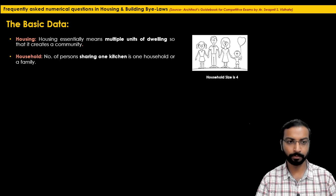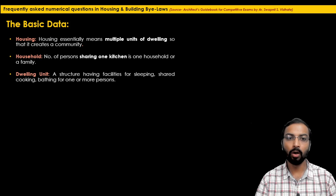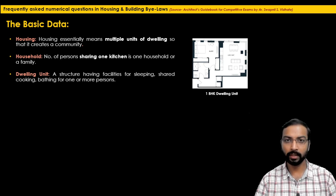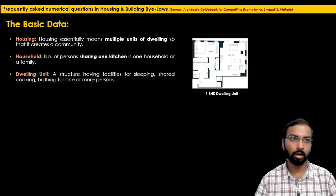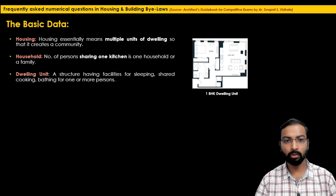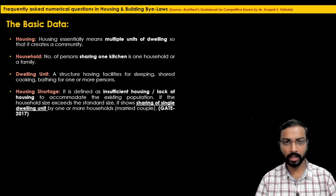The next definition is dwelling unit: a structure having facilities for sleeping, shared cooking, and bathing for one or more persons is called a dwelling unit. We can categorize dwelling units in different terms like 1BHK, 2BHK, or by income criteria such as LIG, MIG, HIG, or EWS units.